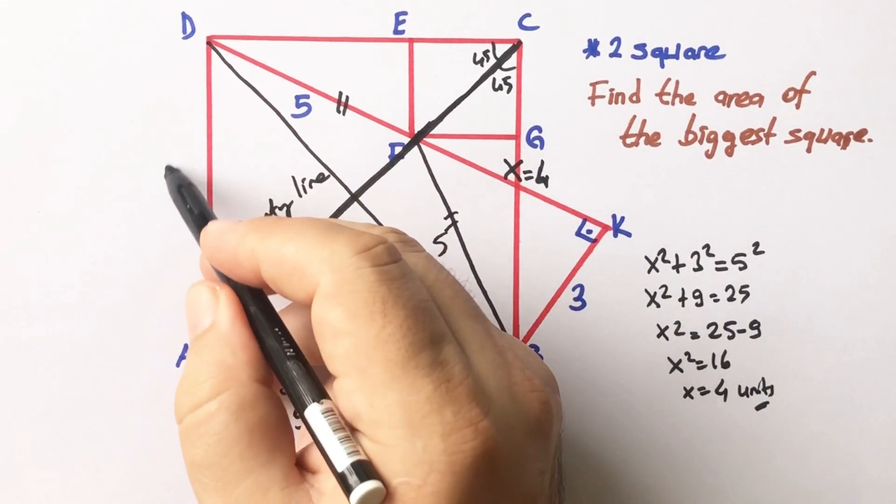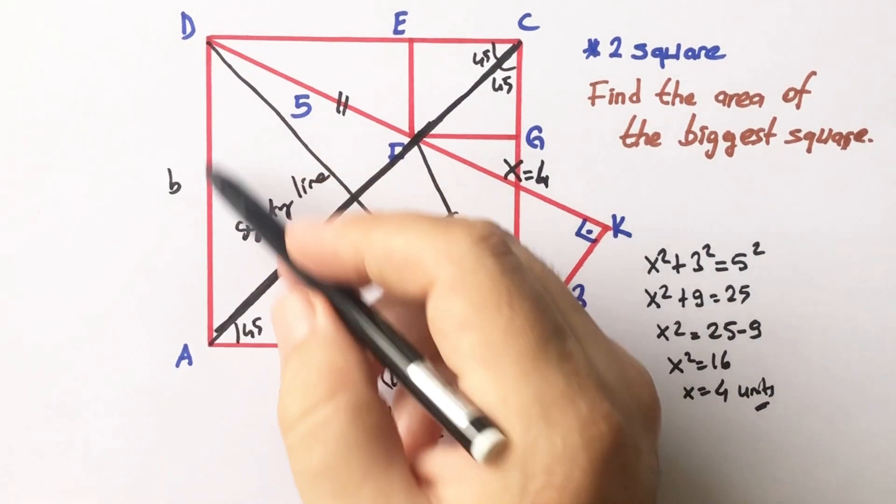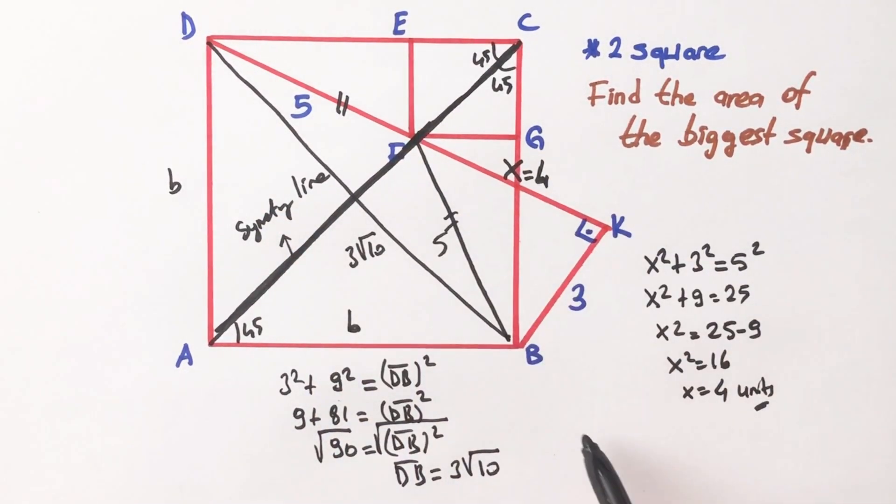So let's call here B units, and this length is also B. We know that this triangle is an isosceles right triangle, therefore hypotenuse must be B root 2.